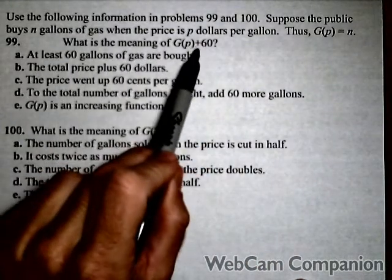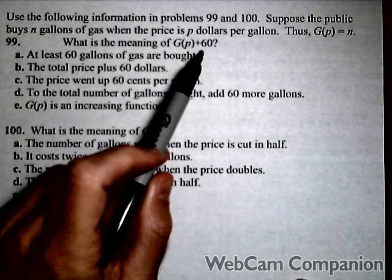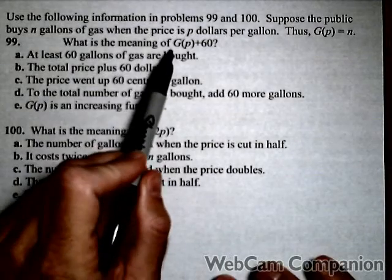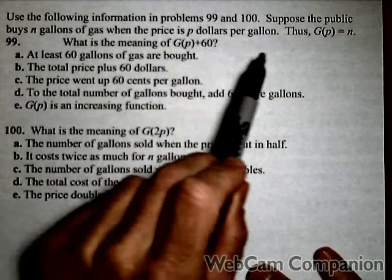What is the meaning of G(p) + 60? We know from our transformations that this is a shift up of 60 on our graph. But now we want to talk about it in context. First thing we want to remember is what G(p) gives us. Well, G(p) gives us n,